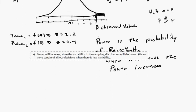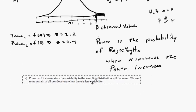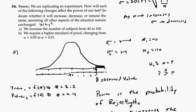The author's explanation is right here. The answer, they say, is the power will increase since the variability in the sampling distribution will decrease. We are more certain of our decisions when there's less variability. So a little bit more of an intuitive argument. I'm also being intuitive because I'm not using exact values, but I'm trying to give you a picture to work with. That's the answer for A.